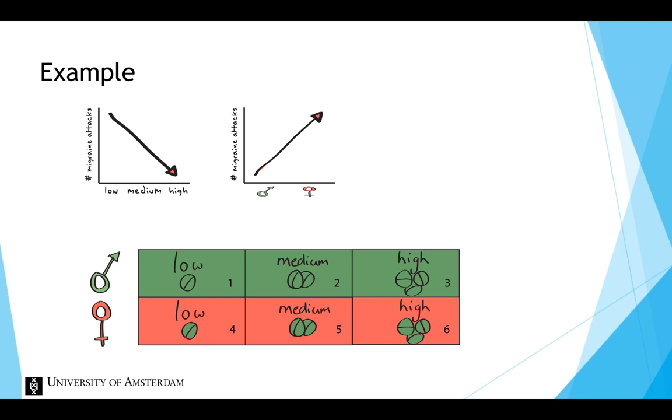Not only can we investigate the effect of dosage and gender, but we can also investigate the combined effect of the two factors. We can see if a higher dosage of the drug is more effective in reducing the number of migraine attacks for women as compared to men. The effects of the factors separately are referred to as main effects. The combined effect of the factors is called the interaction effect.